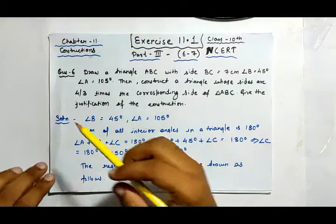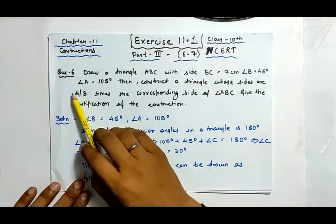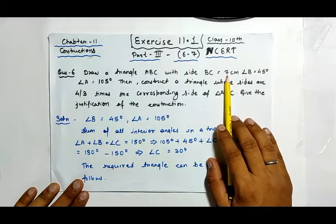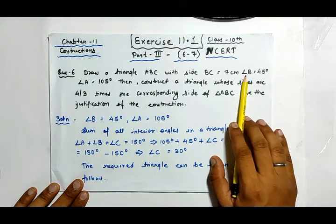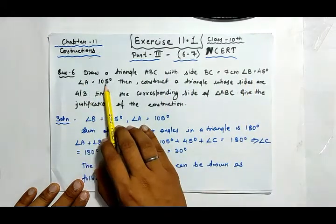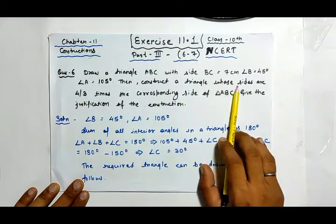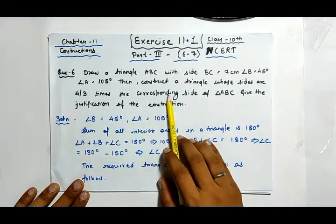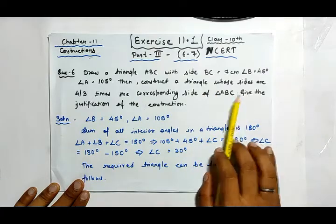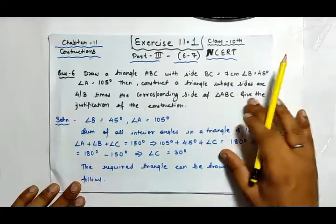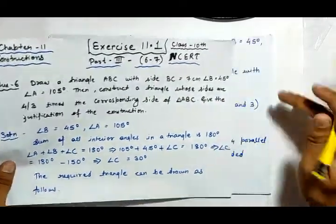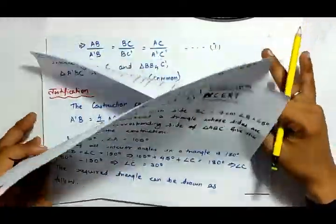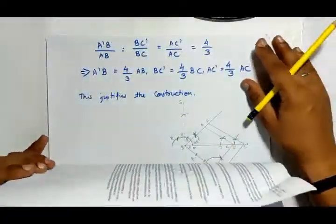Let's start with question number 6: draw a triangle ABC with side BC equal to 7 centimeters, angle B is 45 degrees, angle A is 105 degrees, then construct a triangle whose sides are 4/3 times the corresponding sides of triangle ABC. We also have to give the justification of the construction. Let me show you the diagram of question number 6.